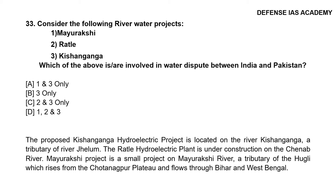Question 33: Consider the following river water projects: 1. Mayurakshi, 2. Rattle, 3. Kishanganga. Which of the above are involved in water disputes between India and Pakistan? The correct answer is option B, 3 only — Kishanganga. The proposed Kishanganga hydroelectric project is located on the river Kishanganga, a tributary of the Jhelum. The Rattle hydroelectric plant is under construction on the Chenab river. The Mayurakshi project is a small project on the Mayurakshi river, a tributary of the Hooghly, which rises from the Chotanagpur plateau and flows through Bihar and West Bengal.